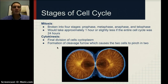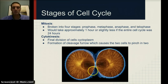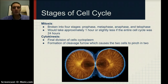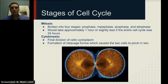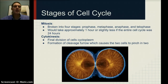On a 24-hour scale, these four phases of mitosis would take approximately one hour. Cytokinesis is the final division of the cell's cytoplasm — it's how the two cells split. There is a formation of a cleavage furrow, which causes the cells to pinch in two. They're pulling apart from each other and pinching in two, and this is happening in animal cells.